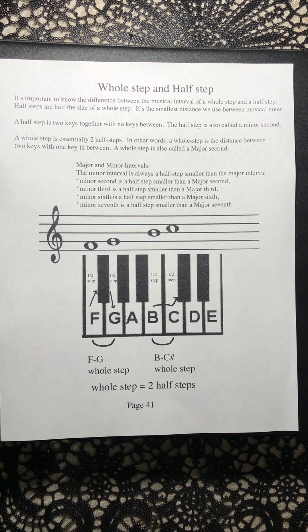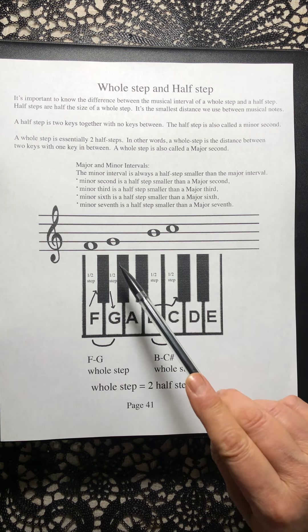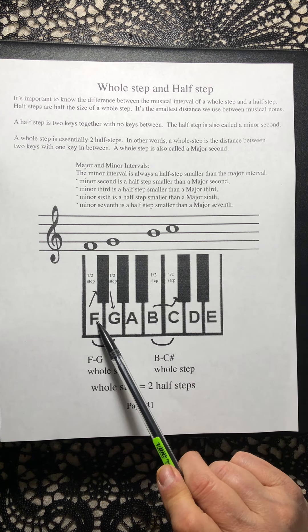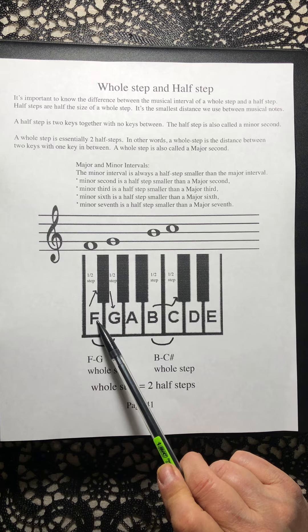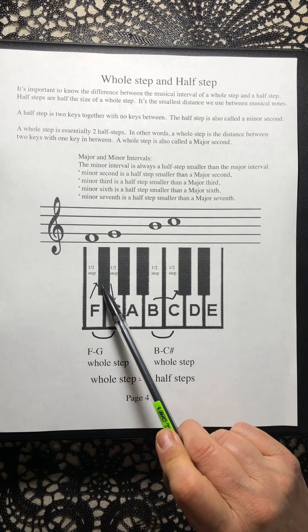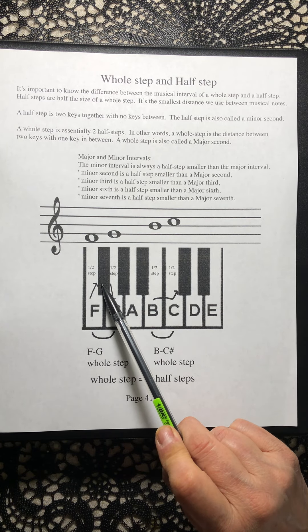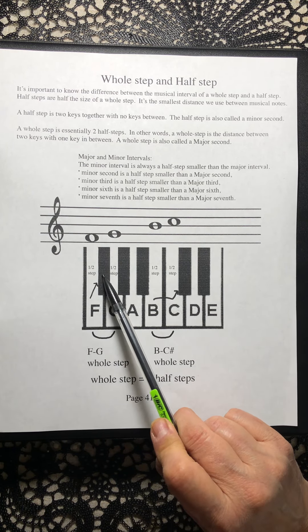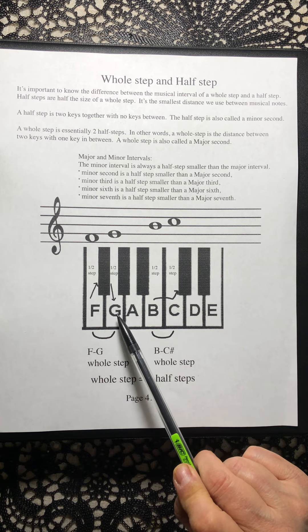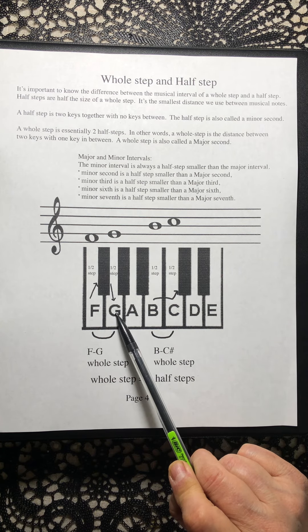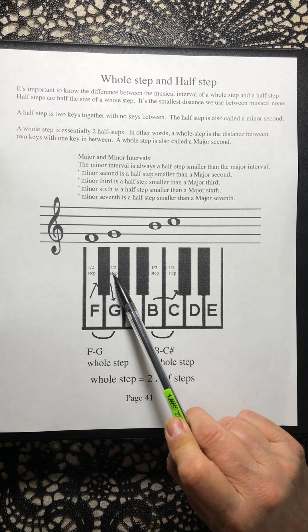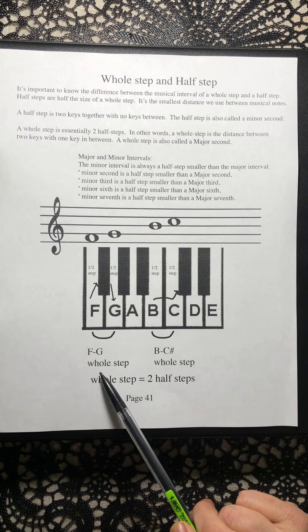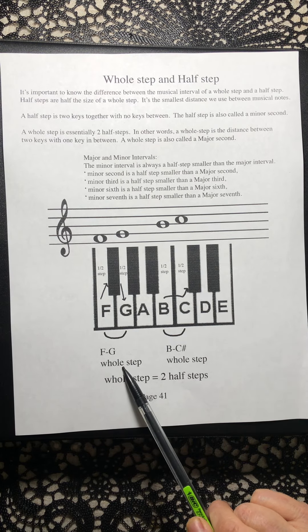In this example we have F to G. F to the black key is a half step. From the black key to the white key is a half step. F to G is a whole step.